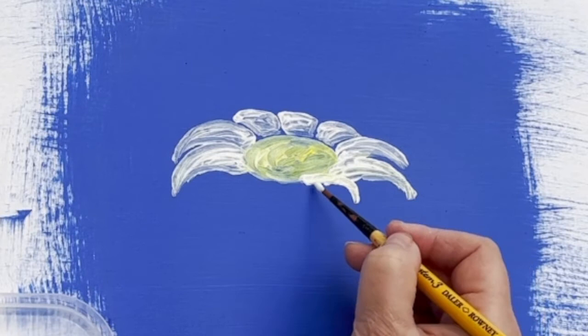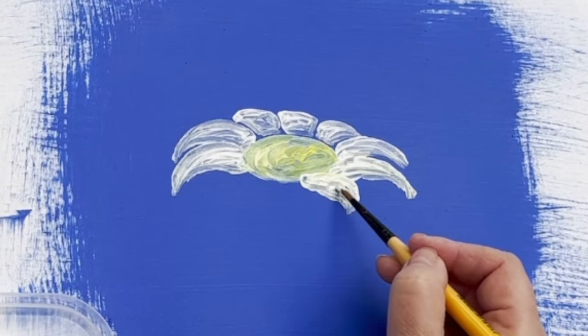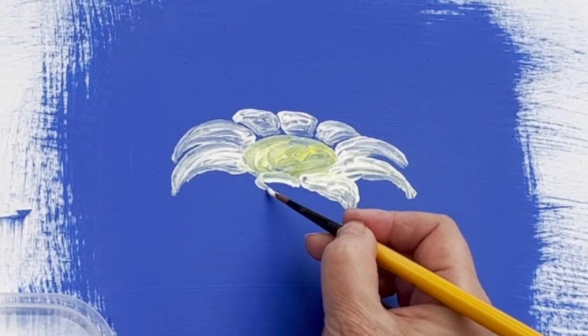Here we have the petals at the front of the daisy. These are the ones which are going to be slightly shorter than all the others because they're actually coming towards us. I'm going to keep probably adjusting these until I'm happy with the balance, because I don't always get them right first time. But that's the beauty of acrylics, because you can actually keep adjusting things until you're happy with them.